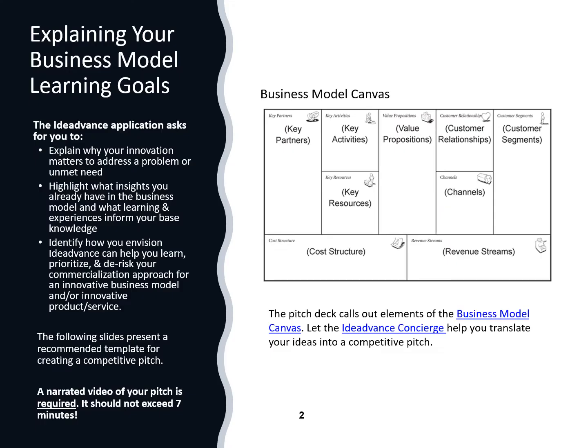Overall for this application, we want you to cover the following questions: What problem does your innovation address and why does it matter? What do you already know about your business model and how do you know it? And what do you hope to get out of this program in terms of de-risking and advancing your commercialization approach? The slides that follow will give more specific guidance. I'll also point out the business model canvas on the right side of this slide — it focuses on 9 building blocks important to all business models. As you put your pitch together, keep these in mind to help prioritize your IDEA Advance goals and learning.